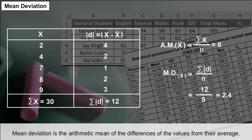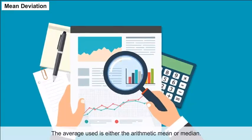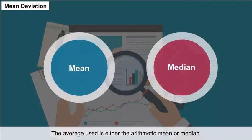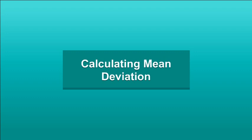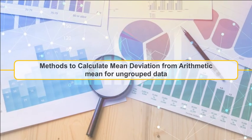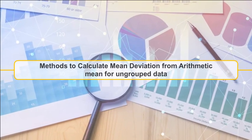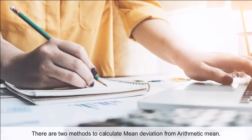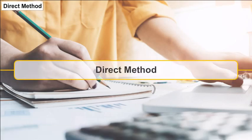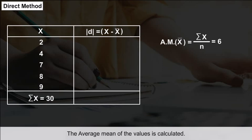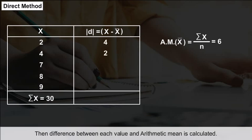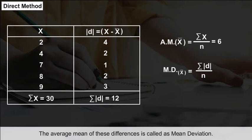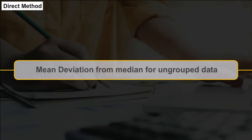Mean Deviation: Mean deviation is the arithmetic mean of the differences of the values from their average. The average used is either the arithmetic mean or the median. There are two methods to calculate mean deviation from arithmetic mean for ungrouped data: the direct method, where the arithmetic mean of the values is calculated, and then the difference between each value and the arithmetic mean is found.